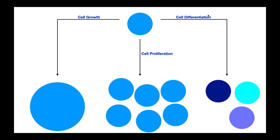The third term here is cell differentiation. When a cell differentiates, it literally transforms into a completely new cell type that most of the time has a very specific or more specific function than the original cell.